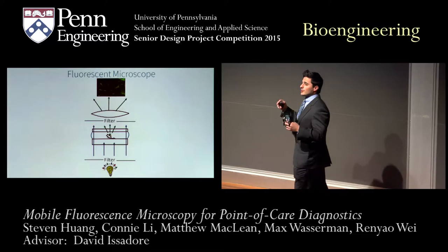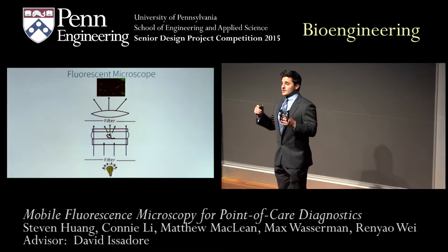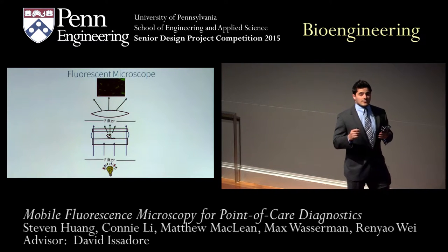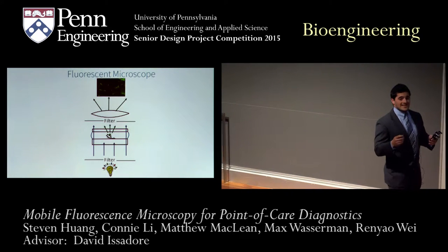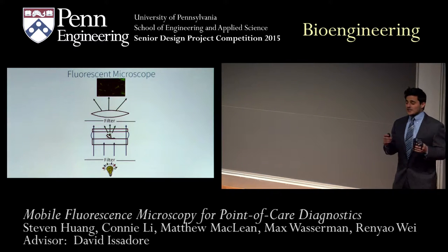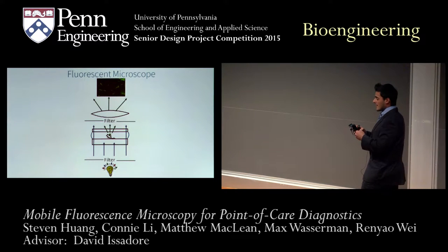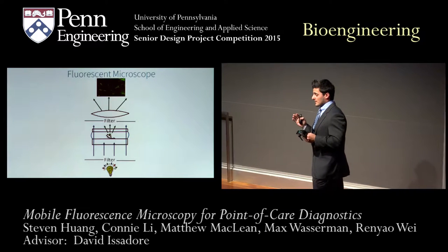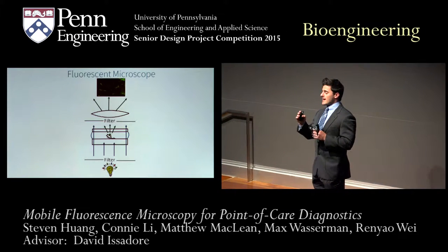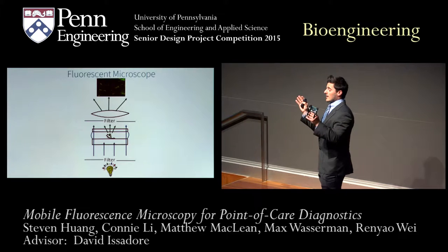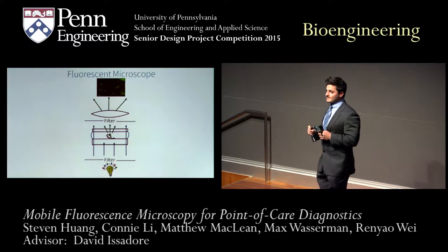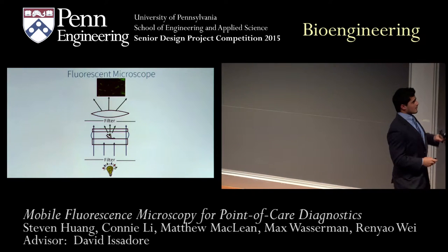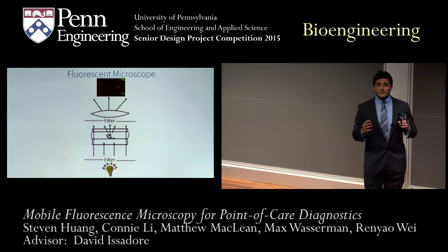The mechanism underlying our project is fluorescence microscopy. Fluorescence microscopy is only possible due to the wide availability of fluorescence tags. A fluorescent tag is something that binds specifically to a cell and not the surroundings. This tag responds to a certain wavelength of light called the excitation wavelength and fluoresces at a different wavelength called the fluorescent wavelength.